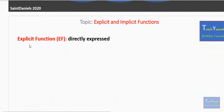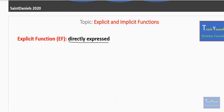To start with, what is an explicit function? This is a function that is directly expressed. Let's quickly look at this. You have something like y equals 2x squared plus 3x. In this equation, the variable y is directly expressed in terms of 2x squared plus 3x.